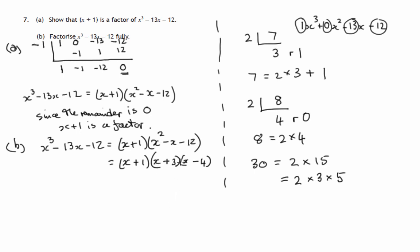So your firsts gives you x squared, which is okay. Your outsides minus 4x plus 3x, that does give us minus x. And then positive 3 times negative 4 does give you negative 12. So that's been successful. We've fully factorized it. And these are the three factors, x plus 1, x plus 3 and x minus 4.